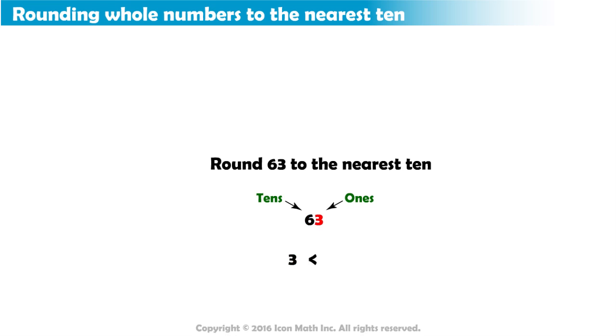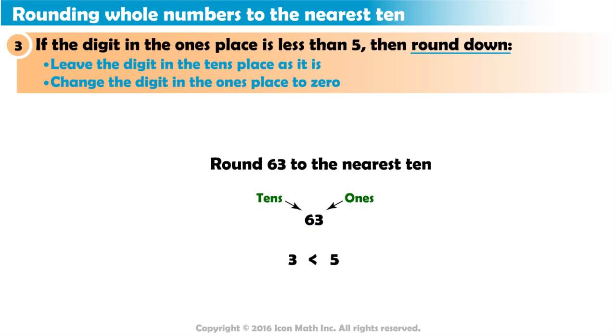Since 3 is less than 5, we will apply this rule. We round down. That is, the digit in the tens place stays as it is, 6, and we change the digit 3 to 0.